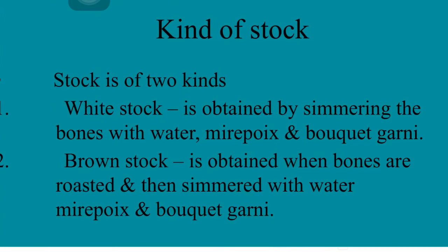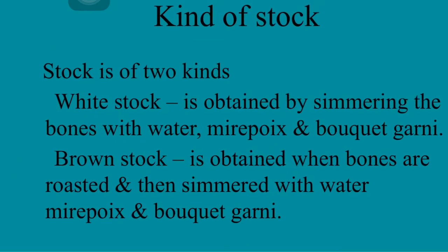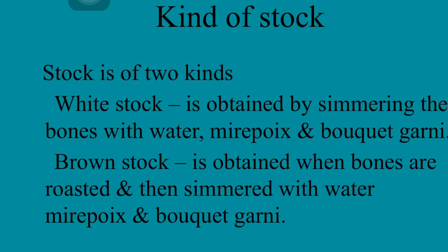Now, kinds of stocks. There are two kinds of stocks: white stock and brown stock. White stock doesn't mean it will be white in color — it means it will be transparent. Brown stock, on the other hand, has a dark color.